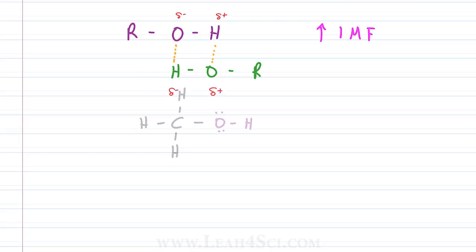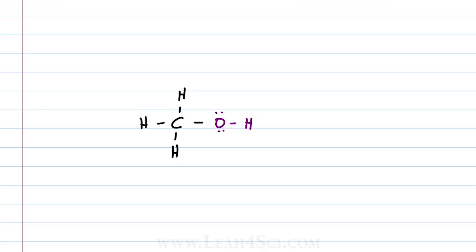For example, if we take methanol which is the smallest alcohol and throw it into a whole lot of water molecules, what happens? The oxygen is partially negative, hydrogen partially positive but water has a very similar structure. Instead of ROH, water is HOH. Each of the bonds between hydrogen and oxygen will be polar covalent giving us a partially negative oxygen and two partially positive hydrogen atoms.